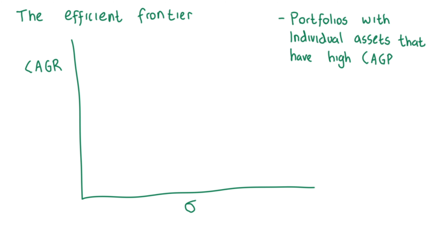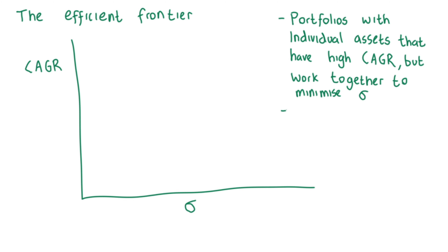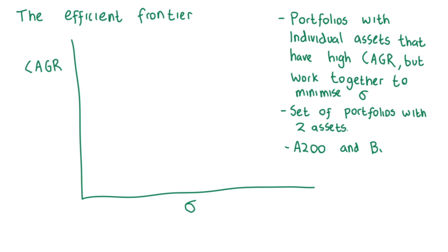The efficient frontier graphically represents portfolios that maximize returns for the assumed risk or volatility. Ideally, an investor seeks to fill a portfolio with individual securities or assets that offer exceptional returns, but with a combined standard deviation that is lower than the standard deviations of the individual securities that make up that portfolio, thereby maximizing expected return while simultaneously minimizing risk.